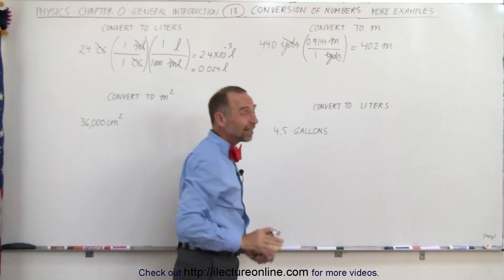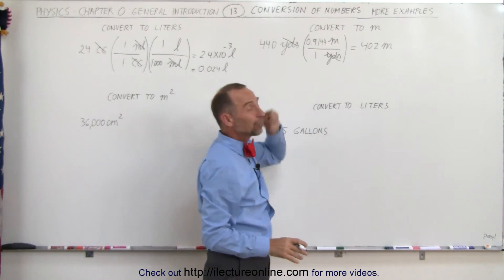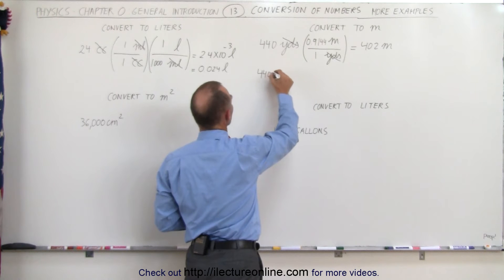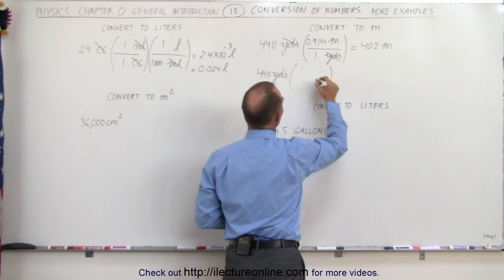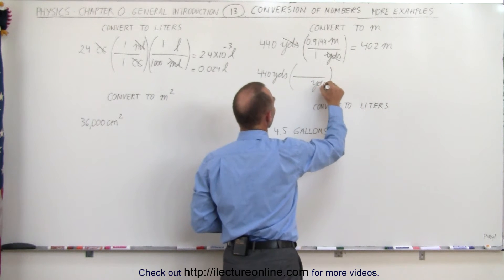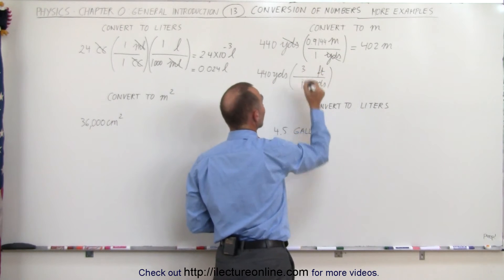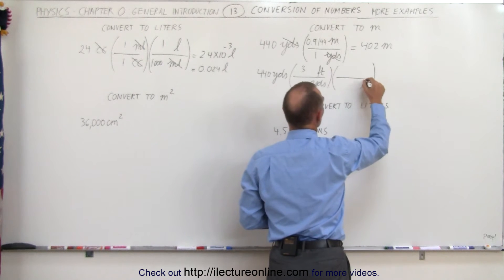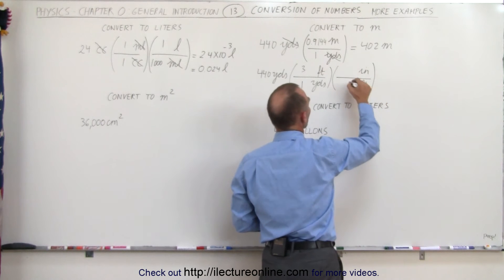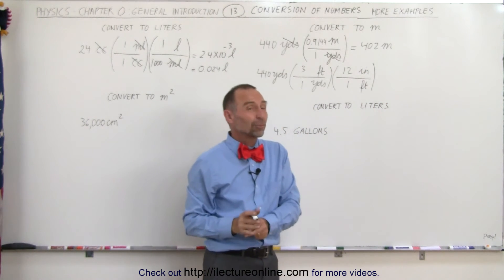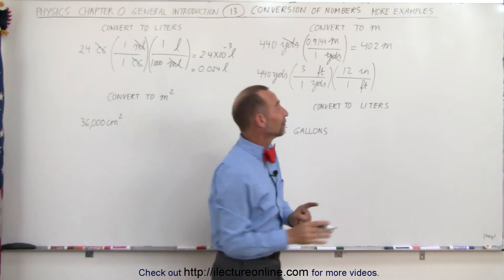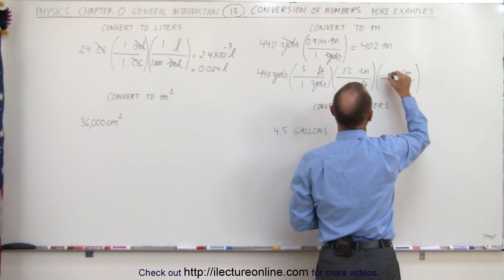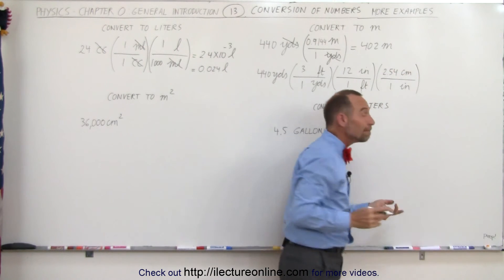Another way to do that conversion — since not many people remember that one yard is 0.9144 meters — is to convert 440 yards step by step. First convert to feet: yards at the bottom, feet at the top — one yard is three feet. Then convert feet to inches: feet at the bottom, inches at the top — one foot is 12 inches. Then convert inches to centimeters, since most people remember that conversion factor: inches at the bottom, centimeters at the top — one inch is 2.54 centimeters.